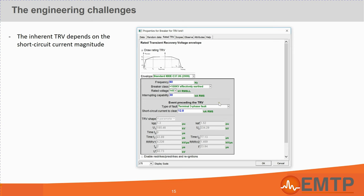The circuit breaker inherent TRV ends up depending on the circuit breaker class, its rated voltage, its interrupting capability, but also the type of fault to clear and its current magnitude. There is a big room for error. To solve this issue, we incorporated IEC and IEEE standards in our circuit breaker model which will automatically draw the correct envelope.